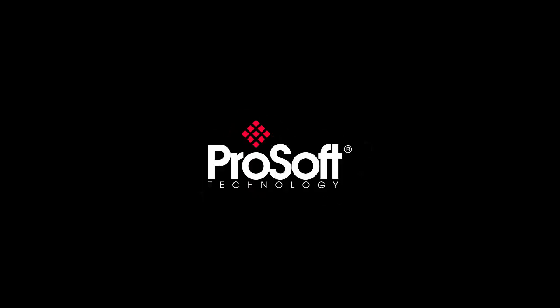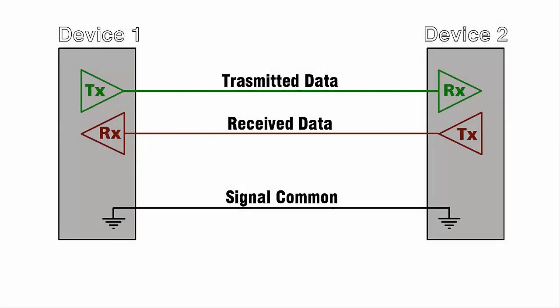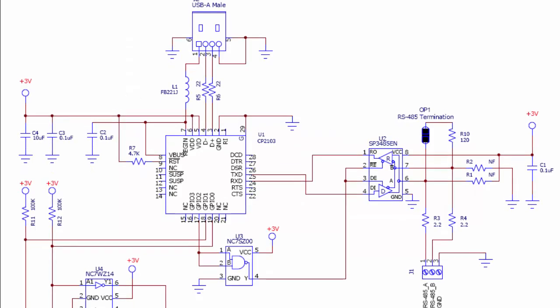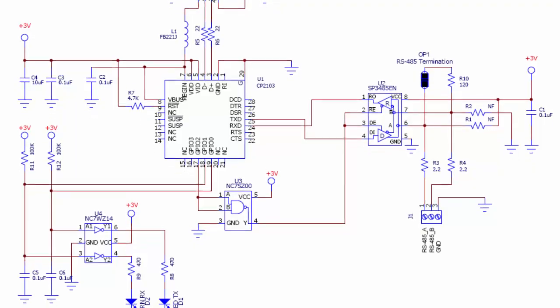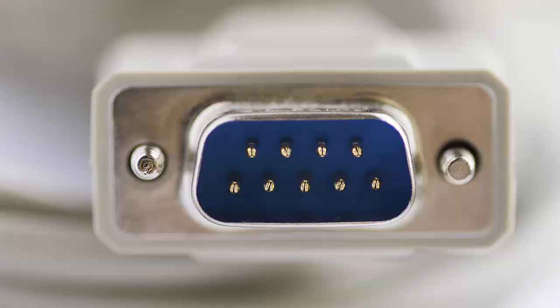Welcome to another edition of ProSoft Technology Video Training. Serial networks are the simplest way to send ones and zeros over a wire. A robust and efficient serial network is the result of good planning and proper installation.